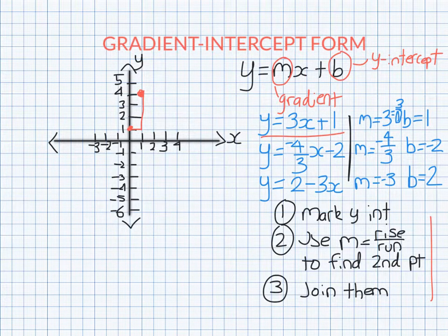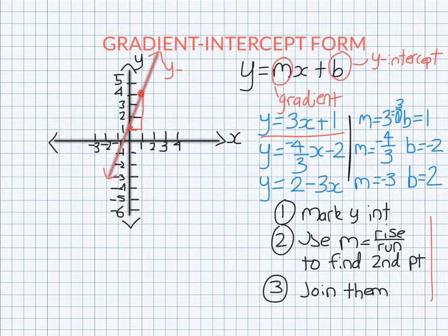So now we just join up the lines, draw a line through both of them, and of course we need to make sure arrows on our lines and it's labeled. But that means we're actually done. So how easy was that? That's the graph of y equals 3x plus 1.